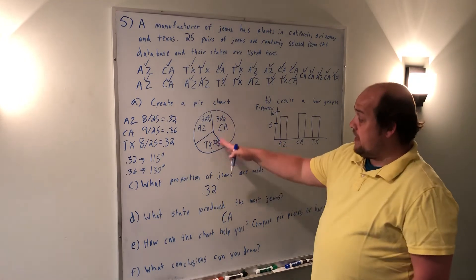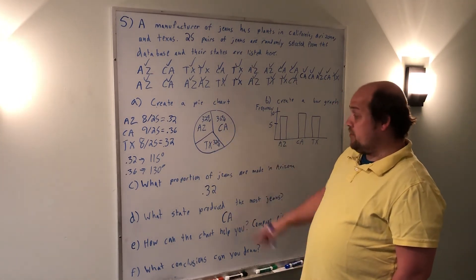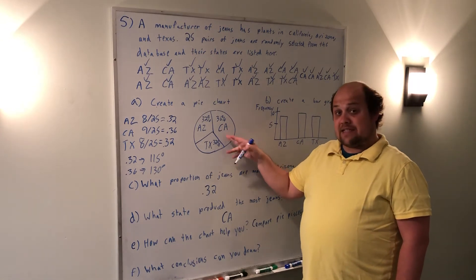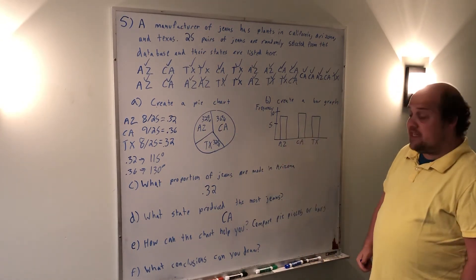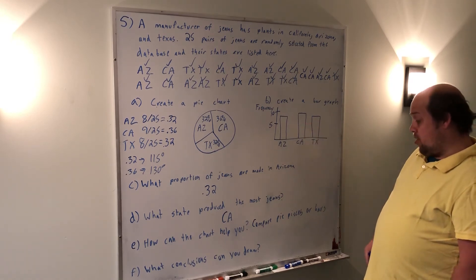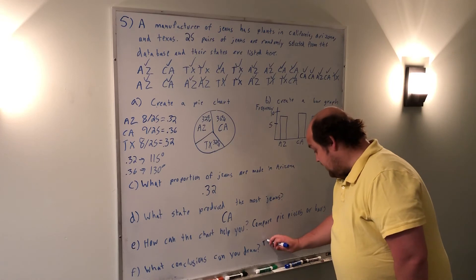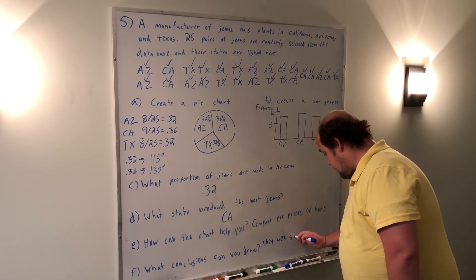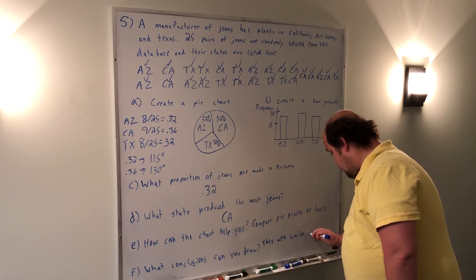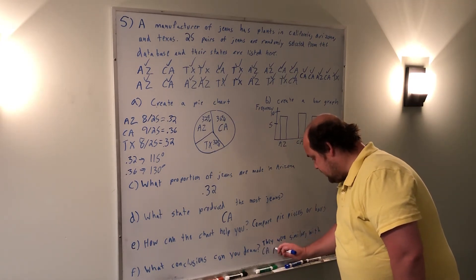So basically, here I can see CA is the biggest. If I'm trying to answer the question, which one produced the most jeans? I look for the biggest section of the pie. Same idea if I'm trying to say which one produced the most jeans. I look for the biggest bar in the bar graph. What conclusions can I draw? They were very similar with California producing slightly more.